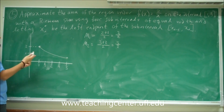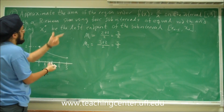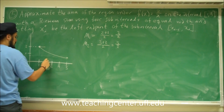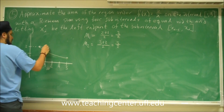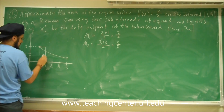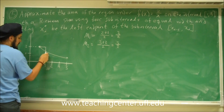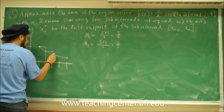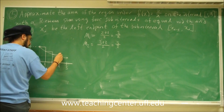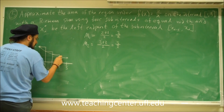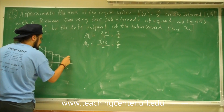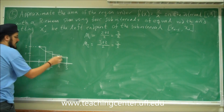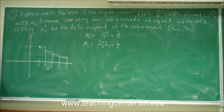We want to use the left endpoints. So we start here and draw a rectangle, then start at the next left endpoint and draw another rectangle, and repeat for the remaining two intervals. Approximately, the sum of these four rectangles will be our area. There will be some error, but we're just approximating.